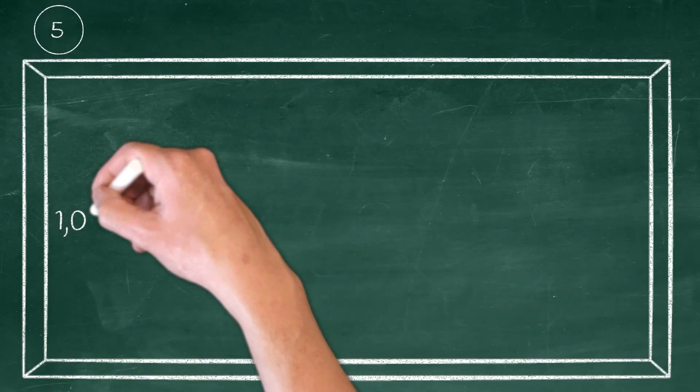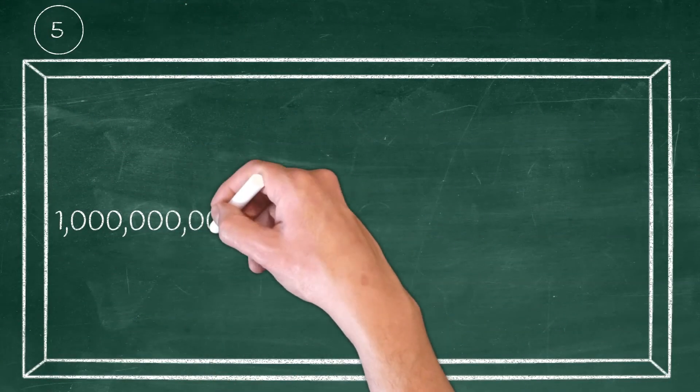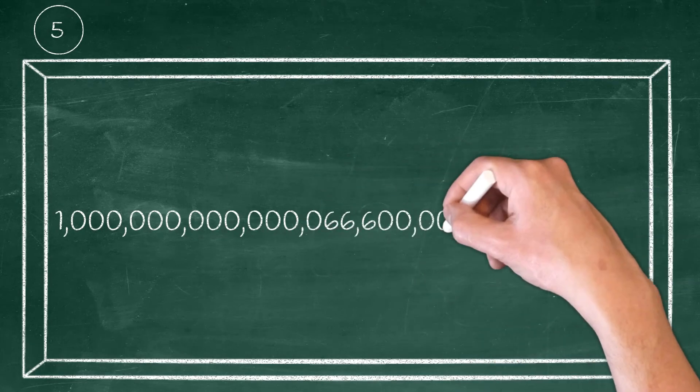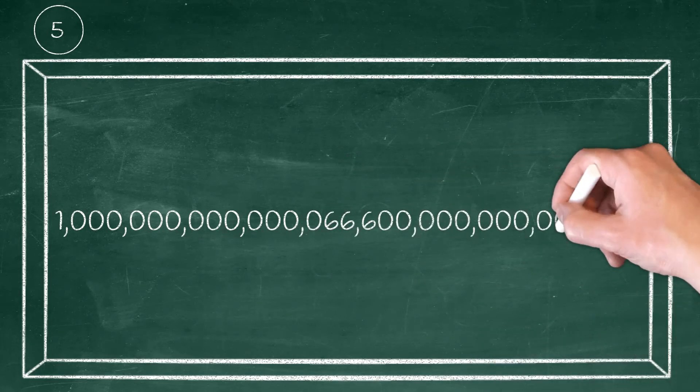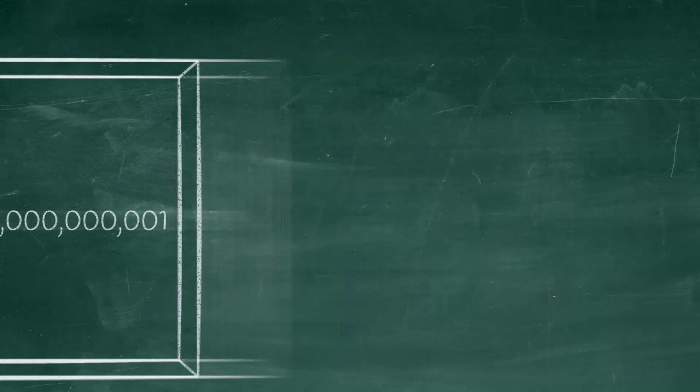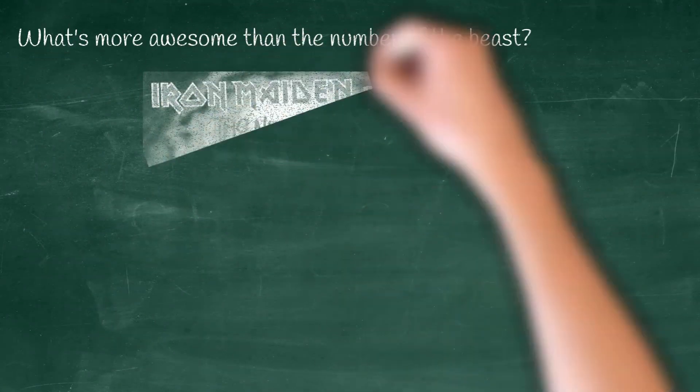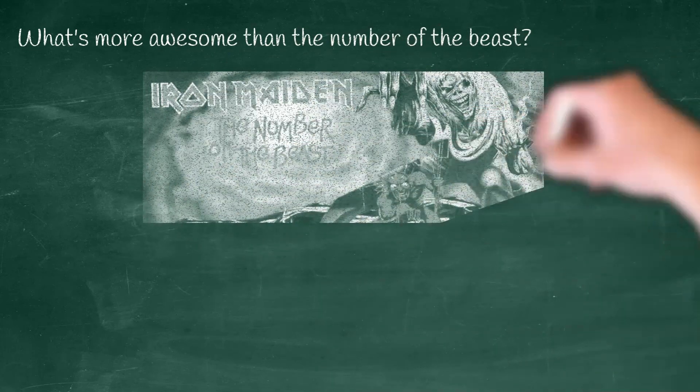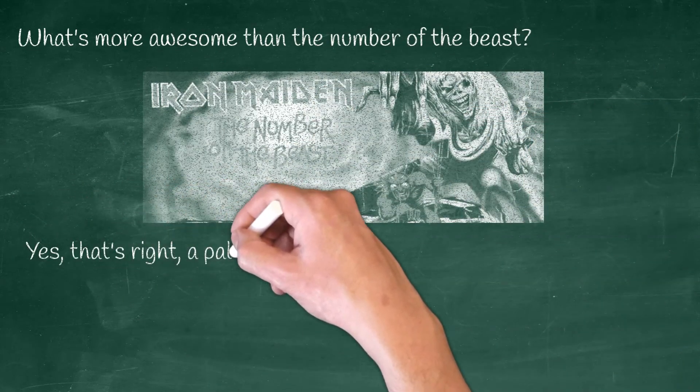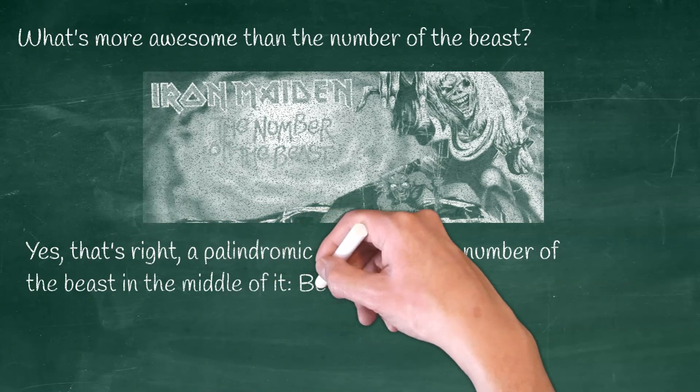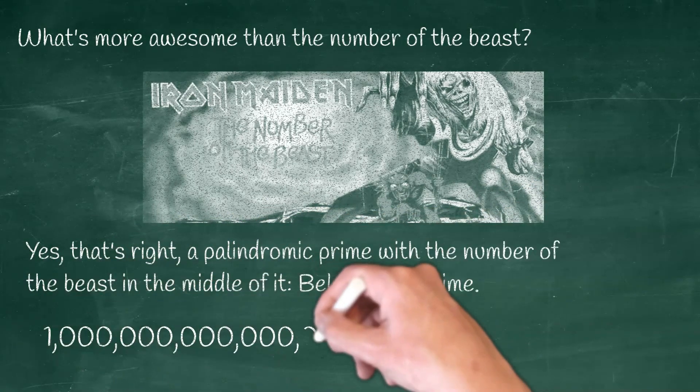Finally, my current favorite mega natural number: one quintillion, 66 thousand, 600 billion, and one. It answers the following question: what's better than Iron Maiden's number of the beast? This palindromic prime, the mother of palindromic primes.